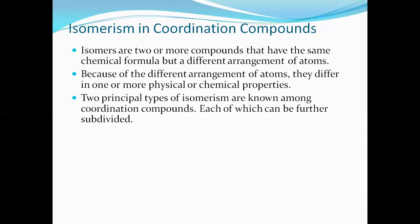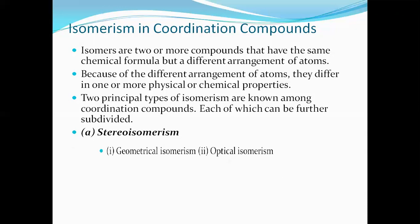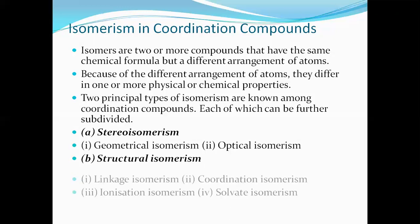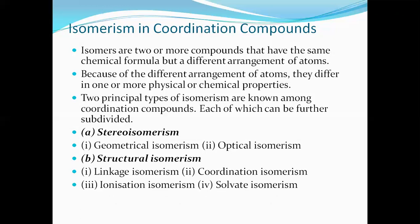There are mainly two types of isomerism in coordination compounds: stereoisomerism and structural isomerism. Stereoisomerism is further divided into geometrical isomerism and optical isomerism. Structural isomerism is further classified into four types: linkage isomerism, coordination isomerism, ionization isomerism, and solvate isomerism. We will go through them one by one.